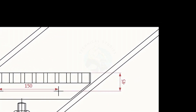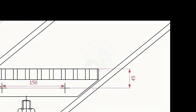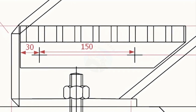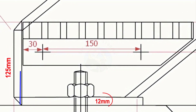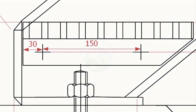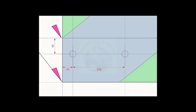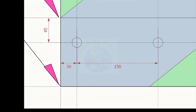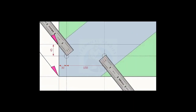Let us mark the location of the first thread. Subtract the thickness of the base plate — 12 millimeters — from the height of the thread, that is 113 millimeters, and mark on the layout. Mark the 30 millimeters and 150 millimeters pitch as shown. Note down the distance from the edge to the hole centers.